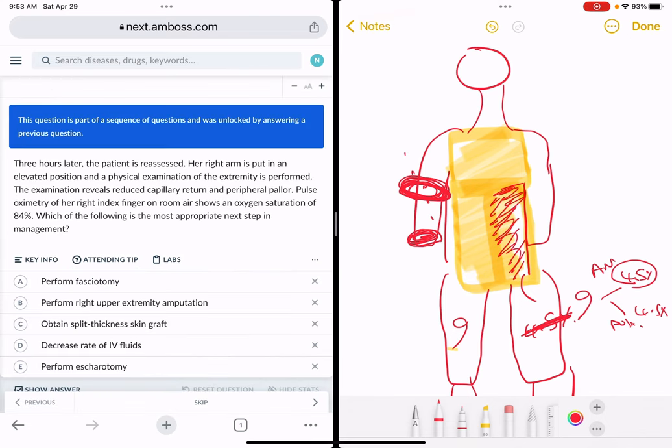Next question. This is the same patient three hours later. She's reassessed and her right arm is put in an elevated position to reduce edema. Physical exam reveals reduced capillary return and peripheral pallor, so indeed there is compromised vascular compromise.